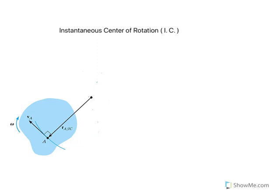Hello, today I want to talk about a point known as instantaneous center of rotation. Its acronym is I.C., I for instantaneous and C for center. This point is also known as instantaneous center of zero velocity, and typically it's denoted by letter C or I.C.